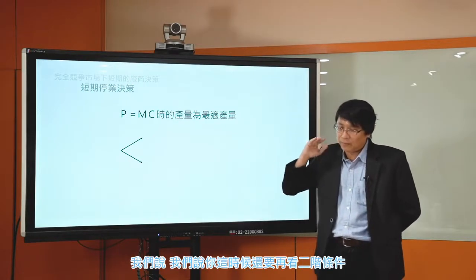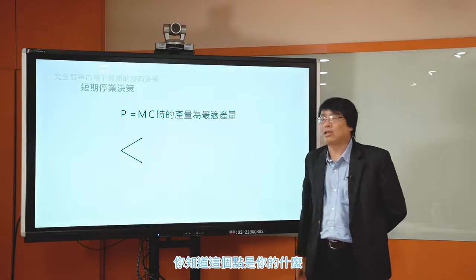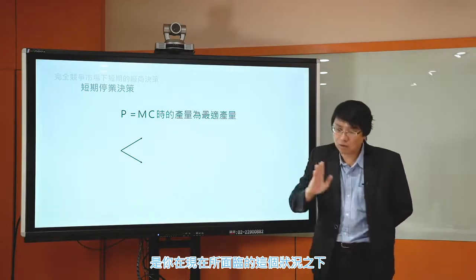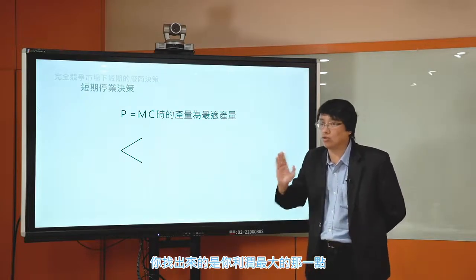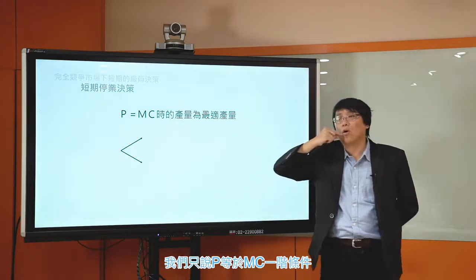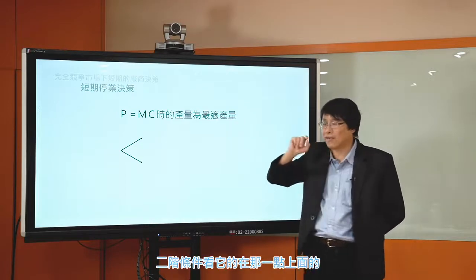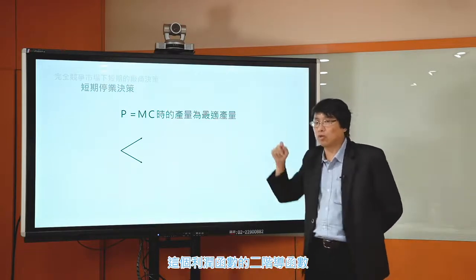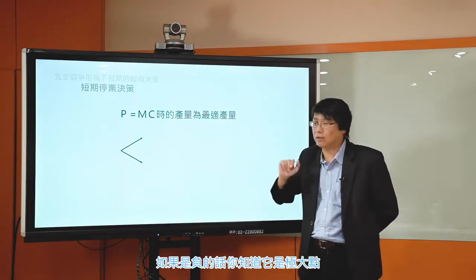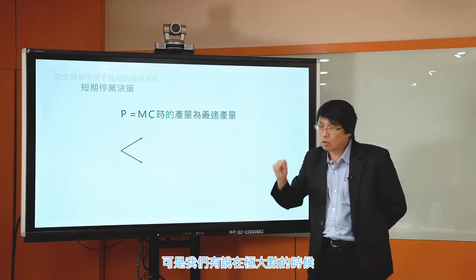P等於MC是一階條件，也就是說在這個情況下，利潤函數在那點上切線為零。可是一階條件有些時候是極小點，有些是極大點。你還要再看二階條件。即便你同時看了一階條件、二階條件，你知道這個點是你在現在所面臨狀況下利潤最大的那一點，可是我沒有保證說即便是利潤最大的那一點，你的利潤還是正的。